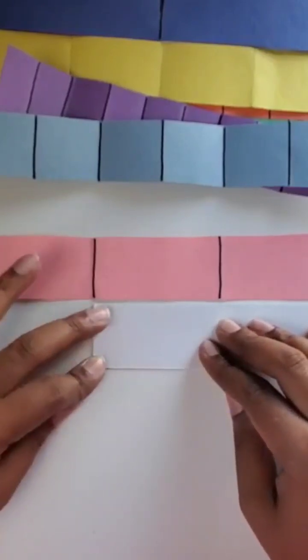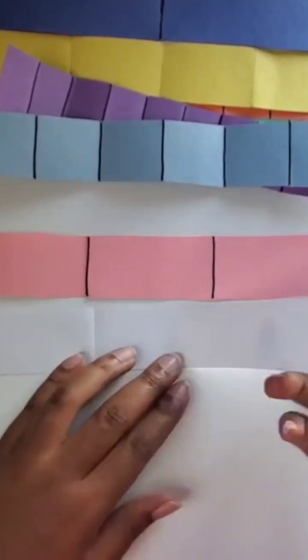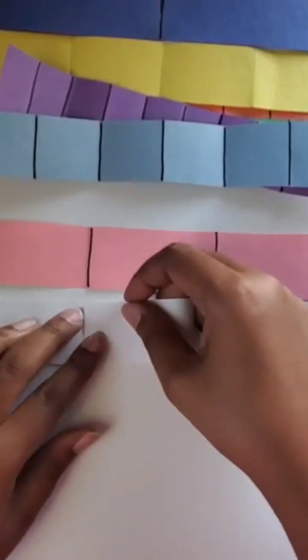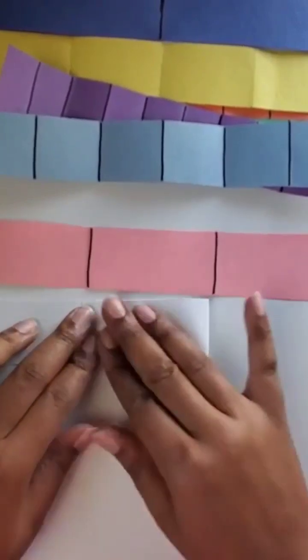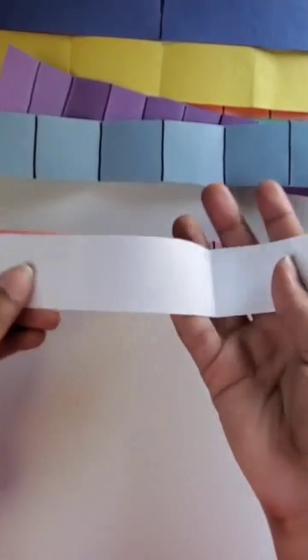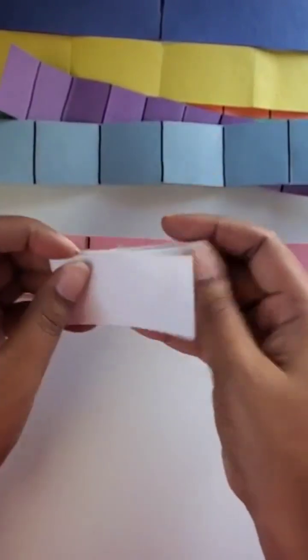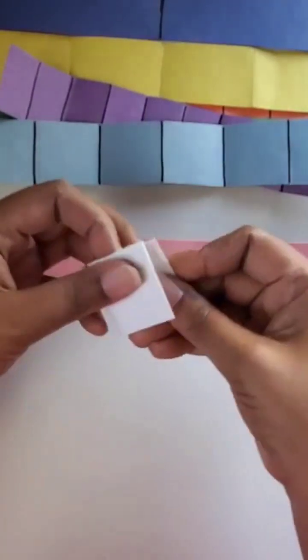Thirds, and then we're going to create sixths. So we have our third-size pieces, we fold those in half...